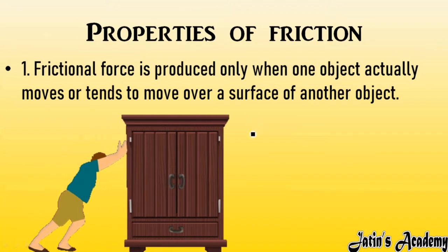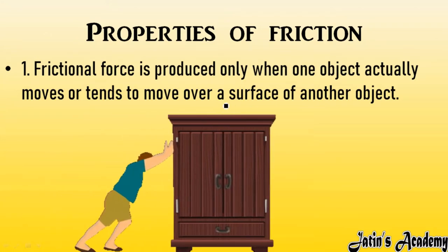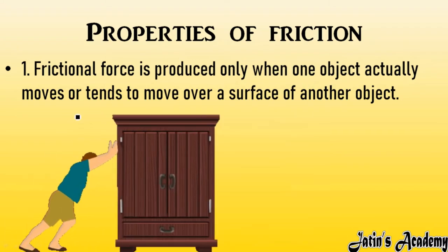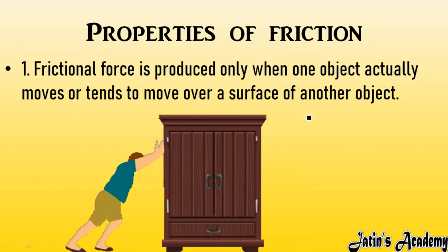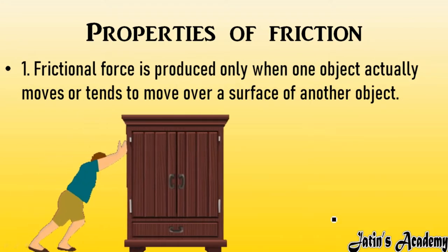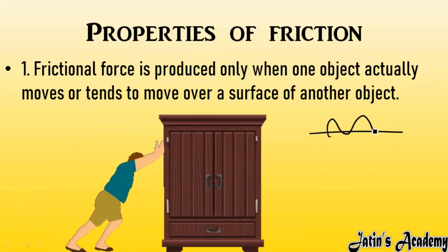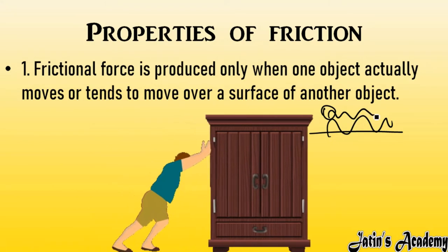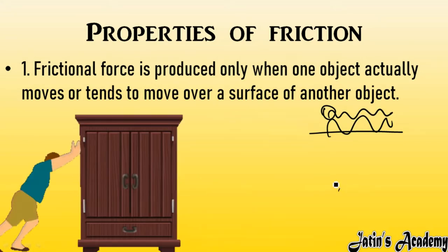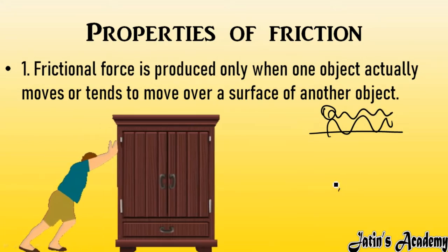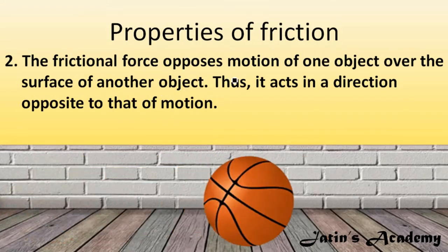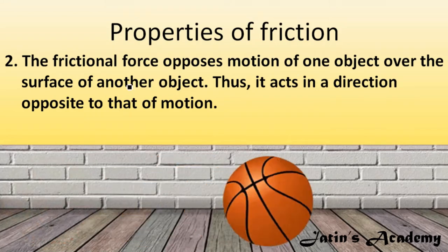Now, properties of friction. First property: frictional force is produced only when an object actually moves or tends to move over the surface of another object. When one object is actually moving over the surface of another, only then interlocking is possible, and only then friction is there.